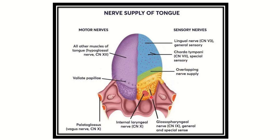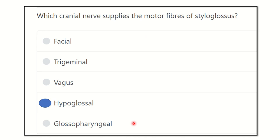In the posterior third, both general and special sensation are supplied by the glossopharyngeal nerve, and at the extreme posterior, both general and special sensation are supplied by the vagus nerve. So our answer is the hypoglossal nerve, because it supplies almost all of the muscles of the tongue, including the styloglossus.